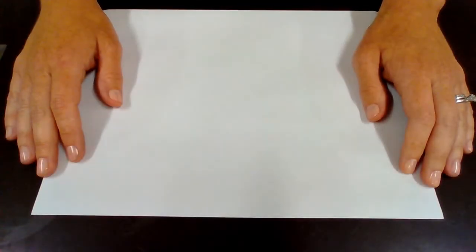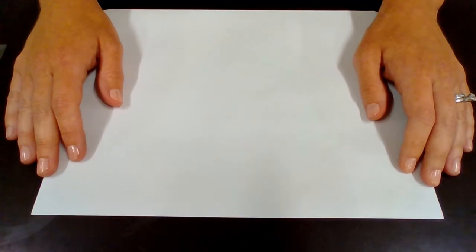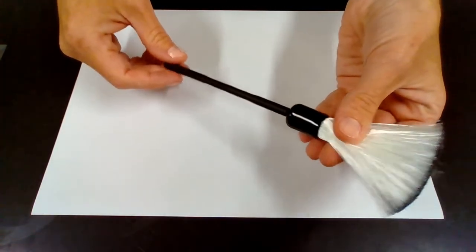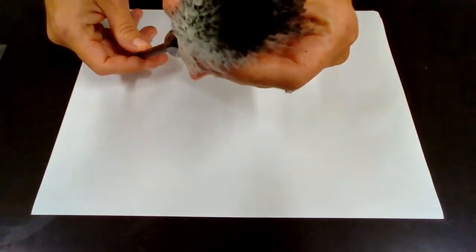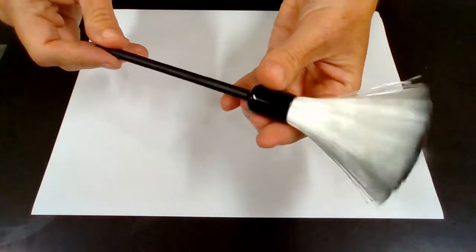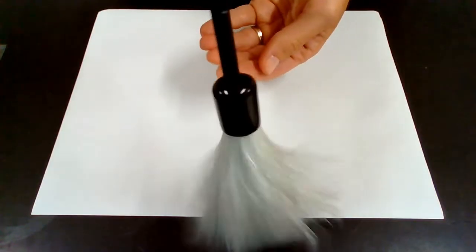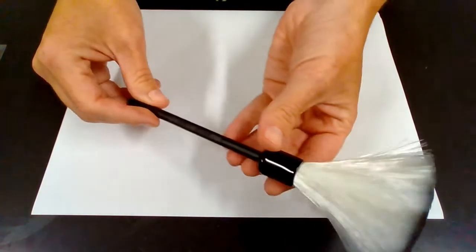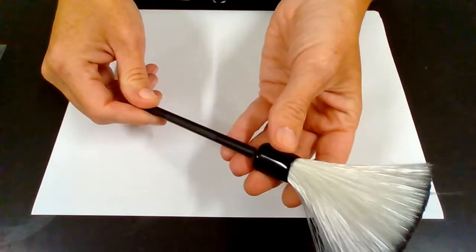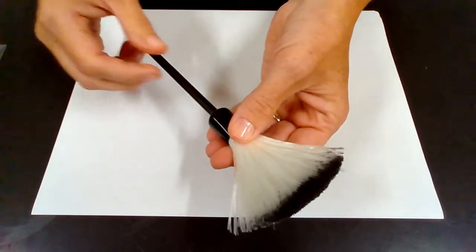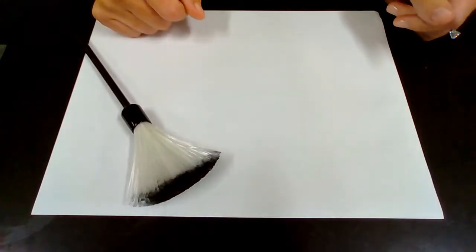Today I'm going to walk you through how to dust for fingerprints using standard black powder. A couple of things you'll need are a fingerprinting brush. I have this fiberglass filament brush with a nice twirl to it, and it's going to work really well to transfer the powder to the fingerprint and stick to that residue.